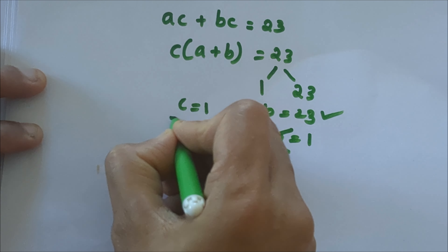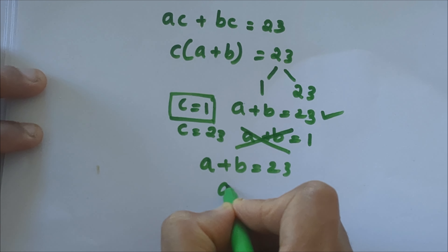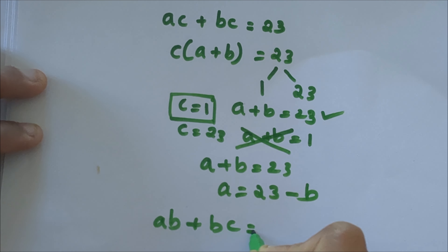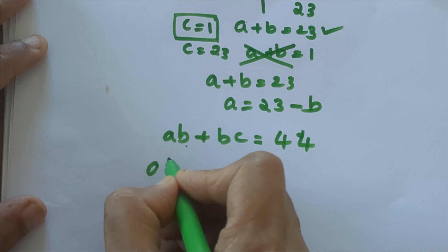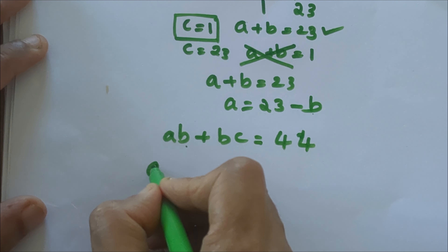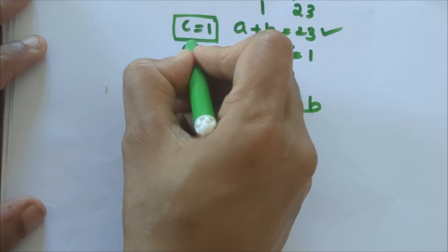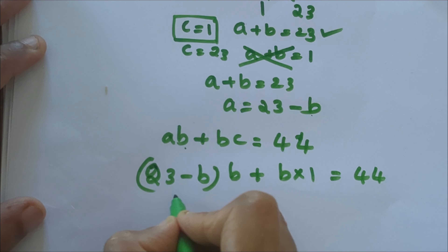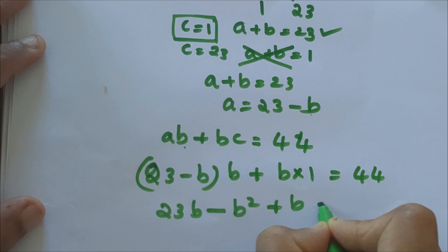We got c as 1 and a plus b equals 23, so a equals 23 minus b. Now we can check the other equation: ab plus bc equals 44. We substitute the value of a, that is 23 minus b, into b, plus b into c which is 1. So that is (23 minus b) times b plus b times 1 equals 44.